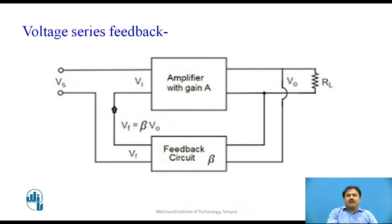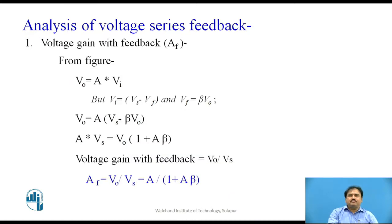The effective voltage across the amplifier input is Vi, which means Vi equals Vs minus beta times Vo. Now let us analyze the voltage series feedback network. We first find the voltage gain with feedback. From the block diagram, Vo equals A times Vi, where A is the gain without feedback. Vi is defined as Vs minus Vf, and Vf equals beta times Vo. Substituting these values, Vo equals A times (Vs minus beta·Vo).